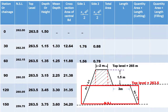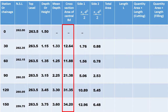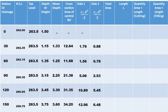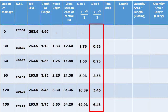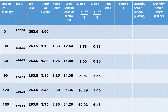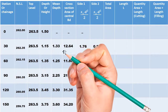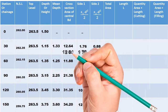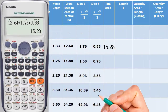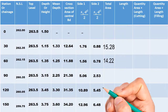For the total area of each section, add the central area (Bd), plus S1×d²/2, plus S2×d²/2. For example, at the 30 chainage interval, 12.64 plus 1.76 plus 0.88 equals 15.28 square meters. Calculate similarly for all remaining chainages.